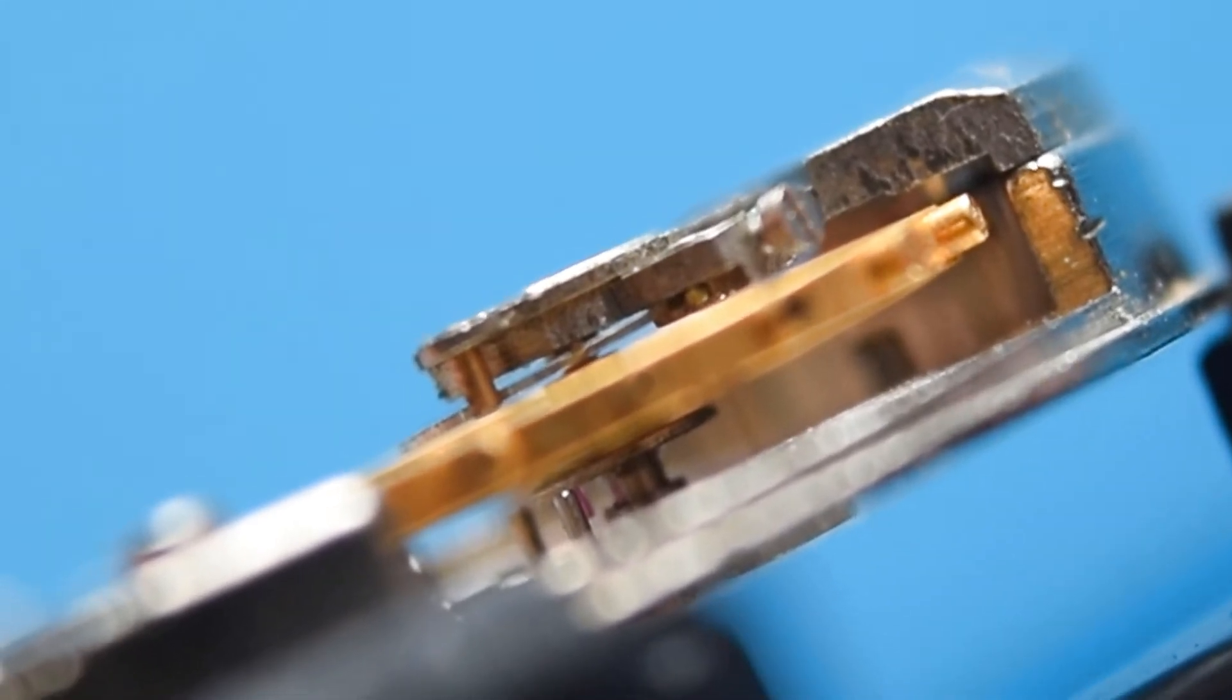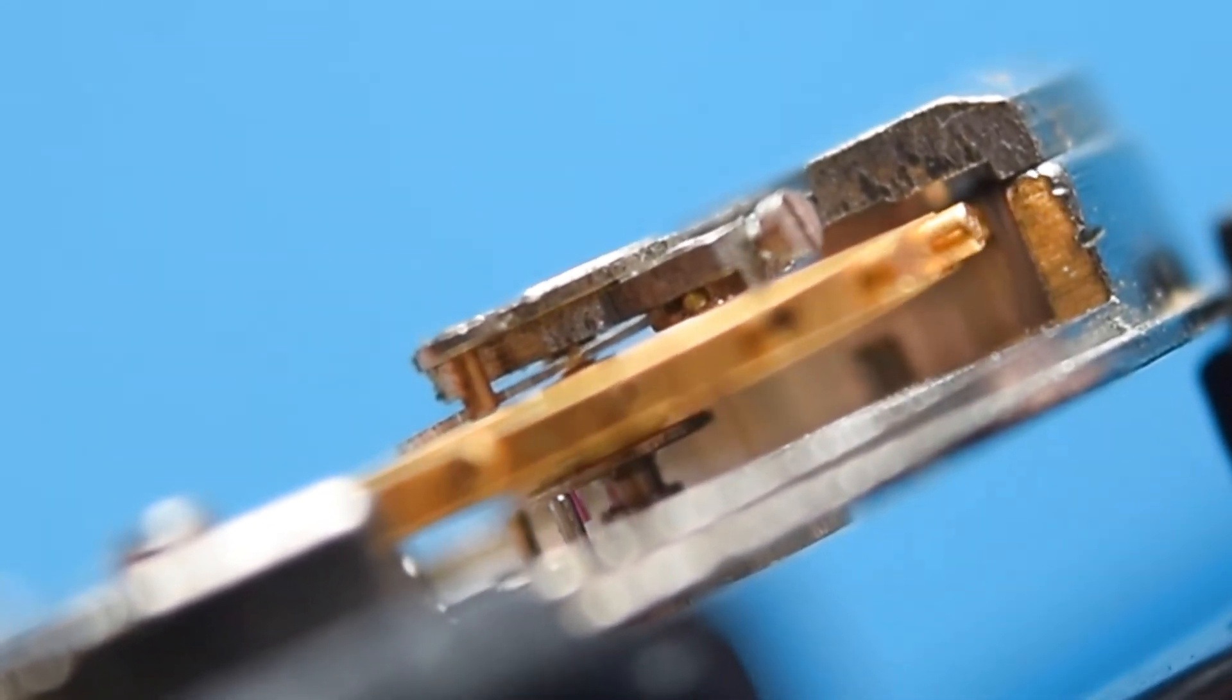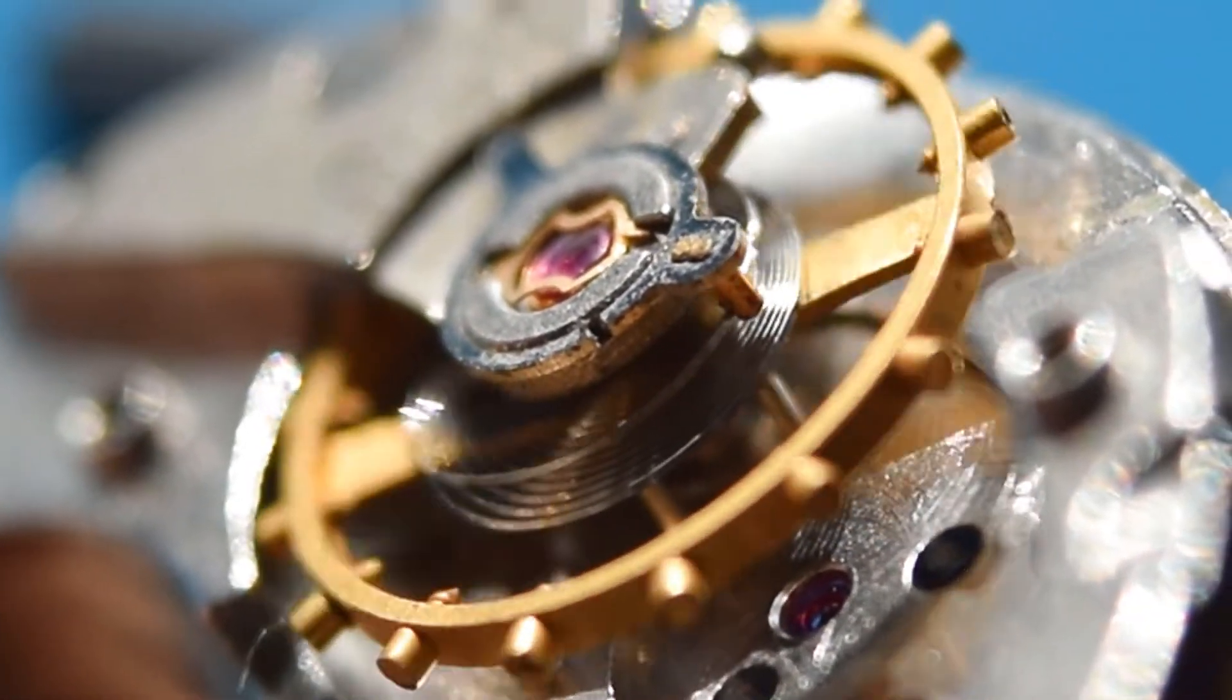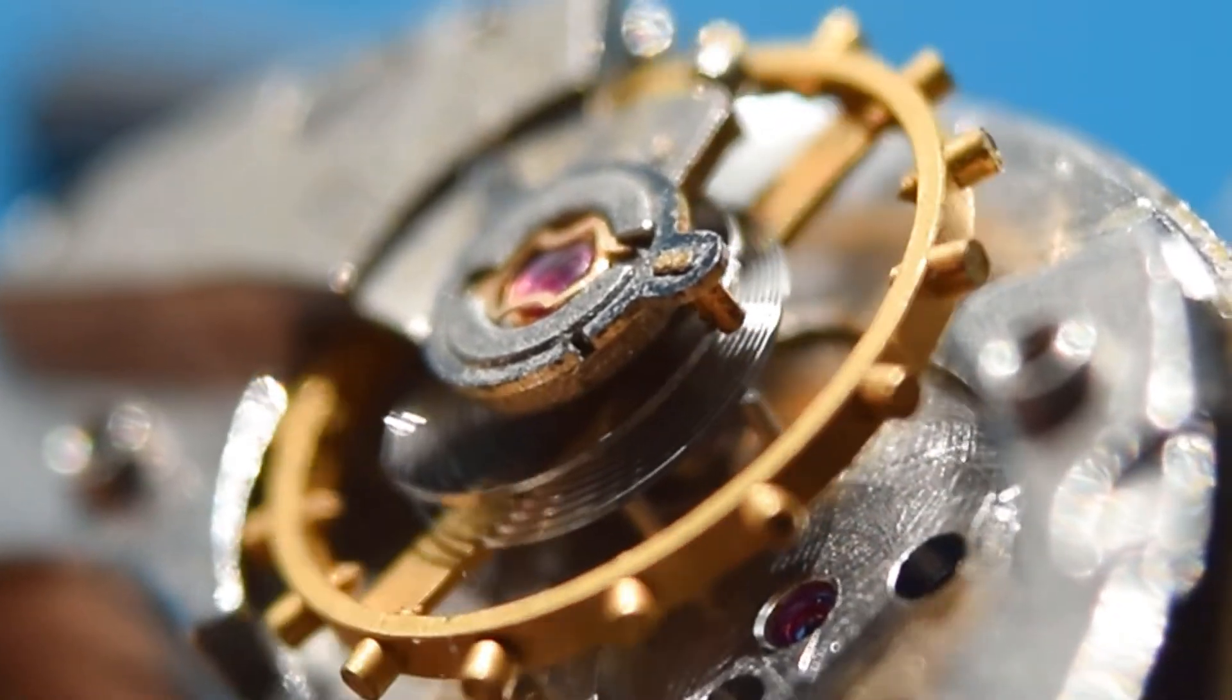There is the roller jewel, we cannot see here, so I can see, but you know that it is between these two pins, so it should be okay.